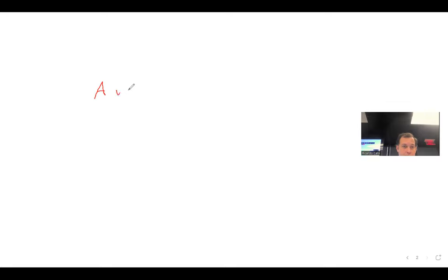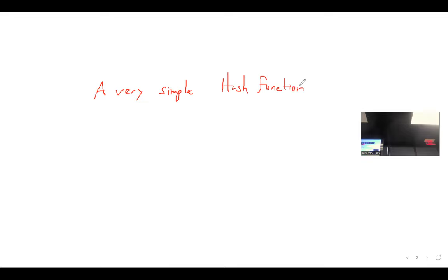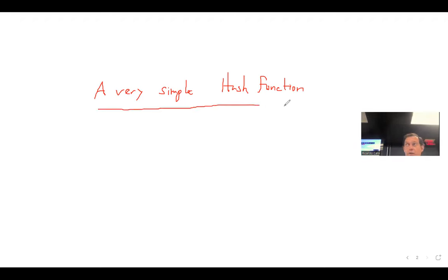We already went a little bit over the theory of hashing. Let's call this a very simple hash function. You may ask, why not go over SHA-1 or SHA-256? Well, because you're going to implement it, and you want to implement something that's a little bit simpler, just to get an idea of how it works. You don't have to understand all the hash algorithms.